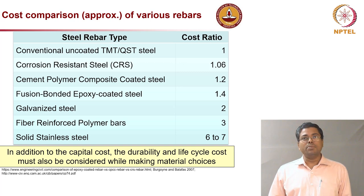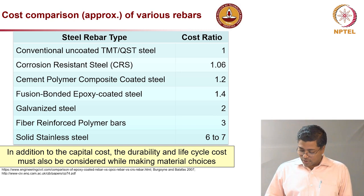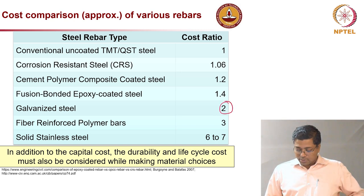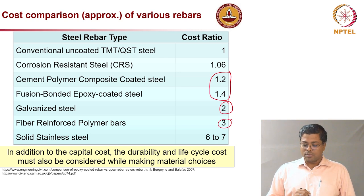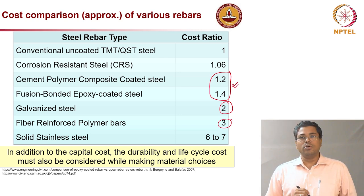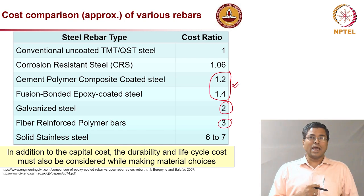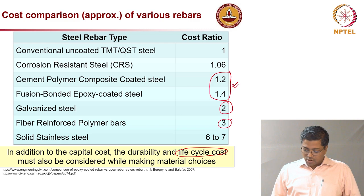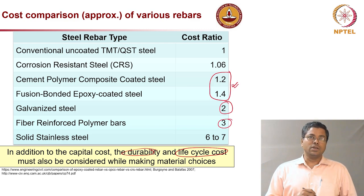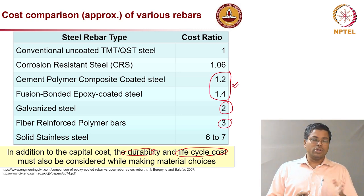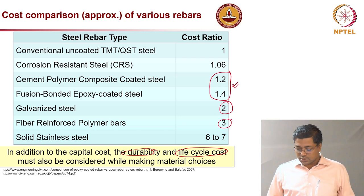A cost comparison of different coated steel rebars: galvanized steel is about twice the cost of uncoated steel; FRP rebars are also about twice the cost; CPC coated and fusion bonded epoxy coated are about 1.2 to 1.4 times the cost. This is probably why the two non-metallic coated rebars are more commonly used. However, we should look not only at capital cost but also at life cycle cost and durability — these are very important before selecting steel reinforcement, because the structure's life depends on both the concrete and the steel.